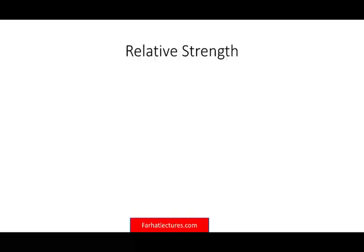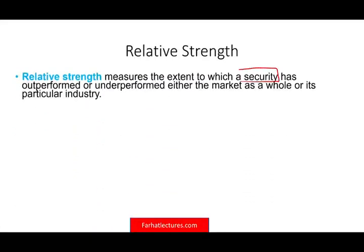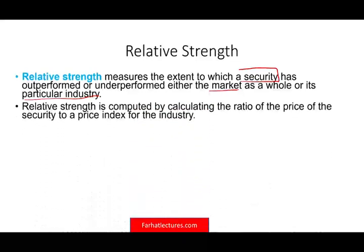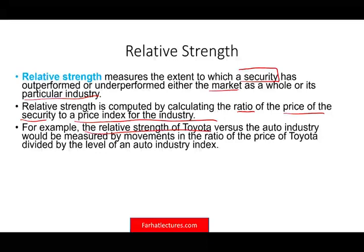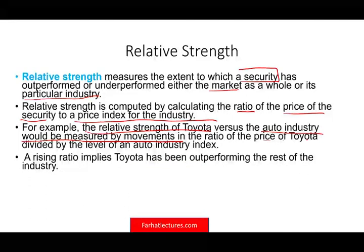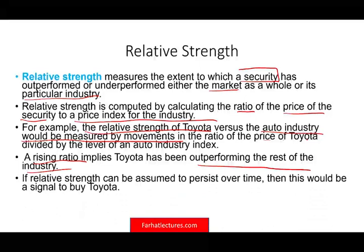Relative strength is how well you are doing relative to someone else. It measures the extent to which a security has outperformed or underperformed either the market as a whole or a particular industry. Relative strength is computed by calculating the ratio of the price of the security to a price index for the industry. For example, you can take the relative strength of Toyota versus the auto industry — the ratio of Toyota's price divided by the auto industry index level. A rise in the ratio implies Toyota is outperforming the rest of the industry, which would be a signal to buy Toyota.